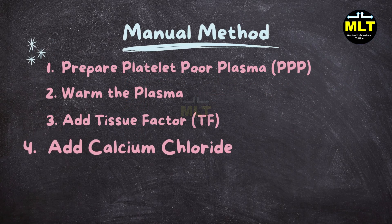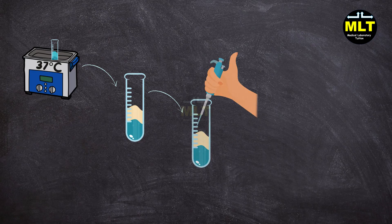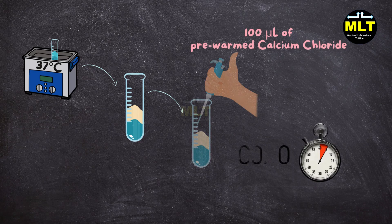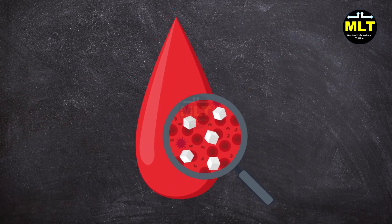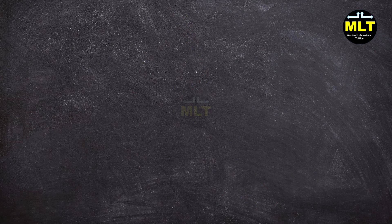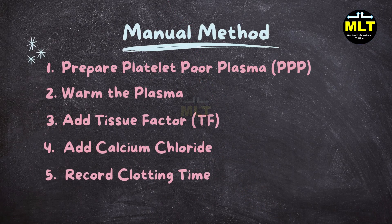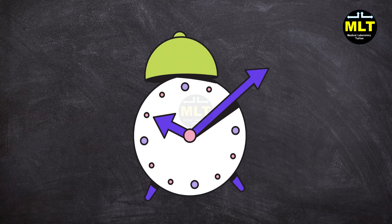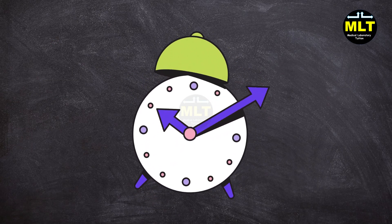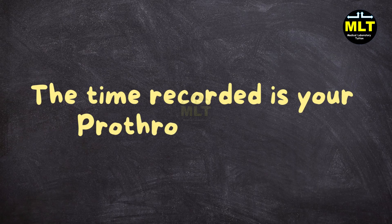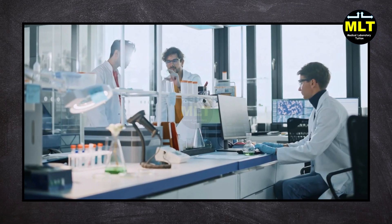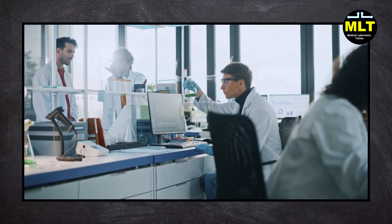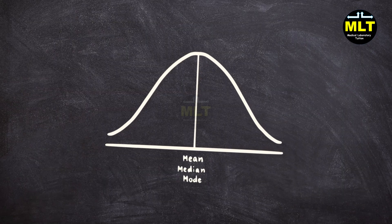Step 4: Add calcium chloride. Quickly add 100 µL of pre-warmed calcium chloride and start the stopwatch — calcium activates the clotting process. Step 5: Record the clotting time. Watch the reaction closely and stop the timer when you see a visible clot form. The time recorded is your prothrombin time (PT). Always run the test in duplicate for accuracy and average the readings using the mean formula.